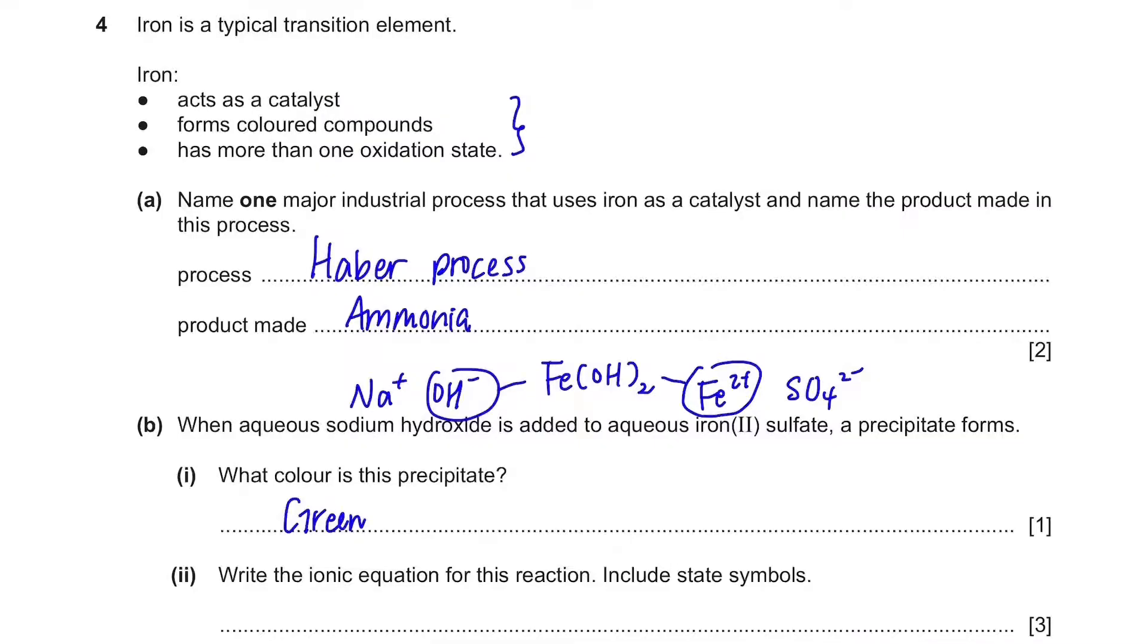Now write the ionic equation for this reaction. Include state symbols. So I've just said that Fe2+ and OH- will form the product. So we can just write that down. We have to include the state symbols. So Fe2+ is in an aqueous solution, so Aq. Also, sodium hydroxide was in aqueous solution, so Aq again. And it's a precipitate, so the product is a solid.